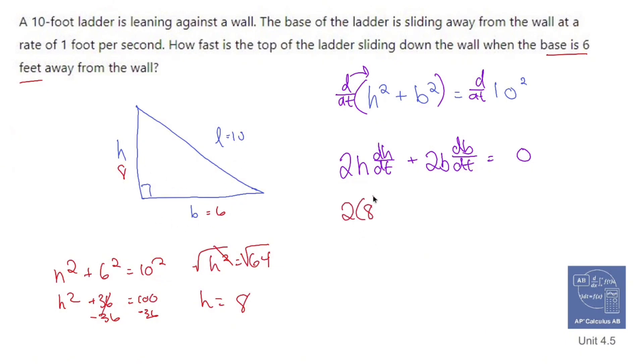So H is 8. So 2 times H. DHDT is going to be the speed at which the height is changing. And that's what I'm looking for. So DHDT, no changes there, plus 2 times B is 6. Yep, 6 at the moment. And DBDT is 1 because that's how fast it's sliding away. That's going to equal 0.